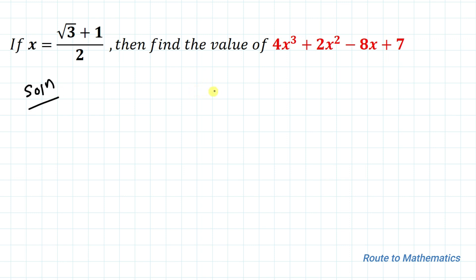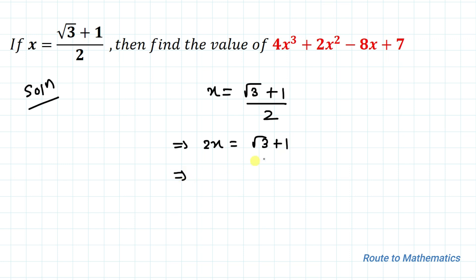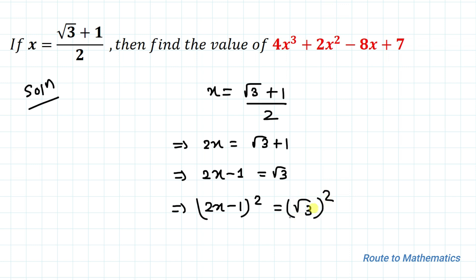We have x = (√3 + 1) / 2. In the next step, I am going to cross-multiply, so we have 2x = √3 + 1. Now let's take 1 to the left-hand side, so we have 2x - 1 = √3.